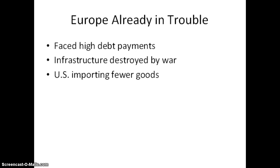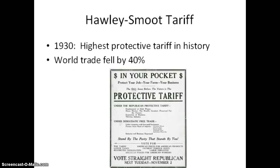Europe had suffered throughout the 1920s. They faced high debt payments due to the war, and their infrastructure had been destroyed. The United States was importing fewer goods as our economy struggled as well. In 1930, the United States passed the Hawley-Smoot Tariff — the highest protective tariff in United States history. Other countries were unable to earn dollars to buy American exports, and they responded by raising their own tariffs. As a result, world trade fell by 40%.